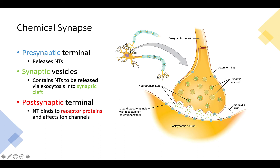When dissecting this diagram, we're looking at a small portion of one neuron's synapse — the presynaptic neuron — and the dendrites of another neuron — the postsynaptic neuron. In this presynaptic terminal, the terminating end of the axon, we have synaptic vesicles that contain neurotransmitters.